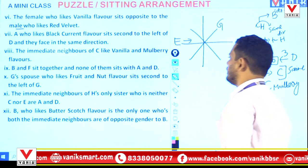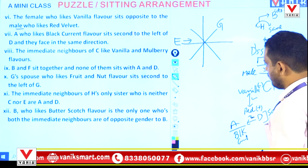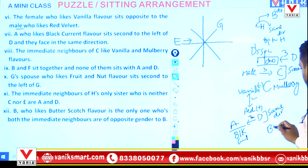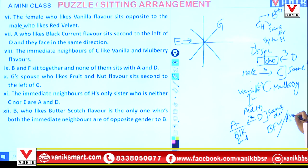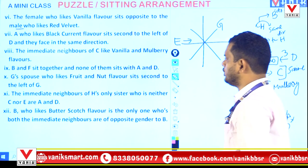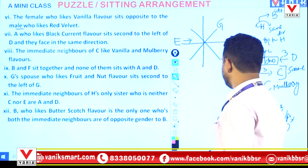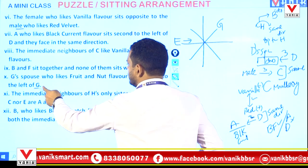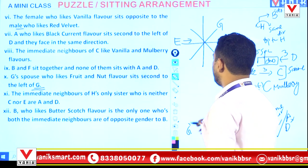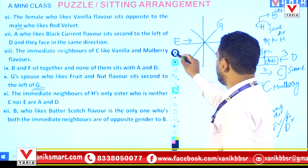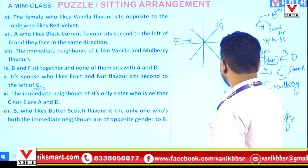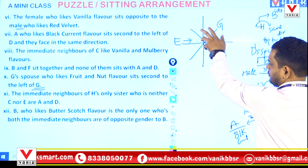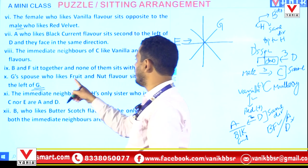Condition 9: BF sit together and none of them sits with A or D — meaning BF are adjacent but not near A or D. Condition 10: G's spouse, who likes fruit nut flavor, sits second to the left of G. Since G is already mentioned in the arrangement, we won't make a separate raw entry but can add this directly — G's spouse is second to G's left with fruit nut flavor.